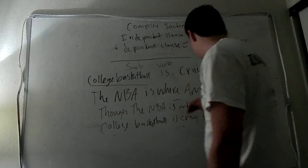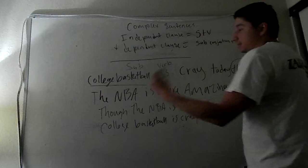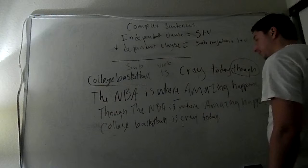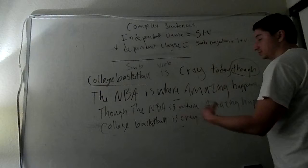You could write this sentence differently. You could say, though the NBA is where amazing happens, college basketball is created day. Though, because it's over here, you have to create a comma. It's where amazing happens. College basketball is created day.